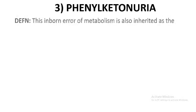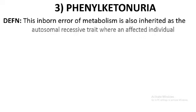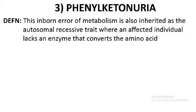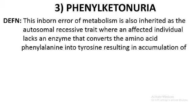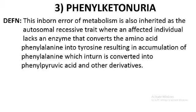In the previous session we discussed about disorders like sickle-cell anemia, a Mendelian disorder. Now we'll continue with the next disorder: phenylketonuria. Phenylketonuria is an inborn error of metabolism inherited as an autosomal recessive trait, where an affected individual lacks an enzyme that converts the amino acid phenylalanine into tyrosine, resulting in accumulation of phenylalanine, which is then converted into phenyl pyruvic acid and other derivatives.